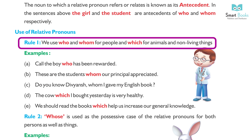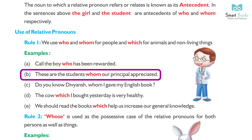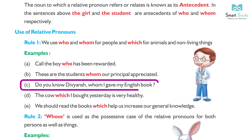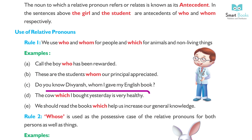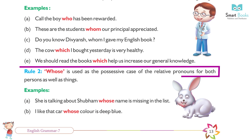We use who and whom for people, and which for animals and non-living things. Examples: (a) Call the boy who has been rewarded. (b) These are the students whom our principal appreciated. (c) Do you know the one to whom I gave my English book? (d) The cow which I bought yesterday is very healthy. (e) We should read the books which help us increase our general knowledge.